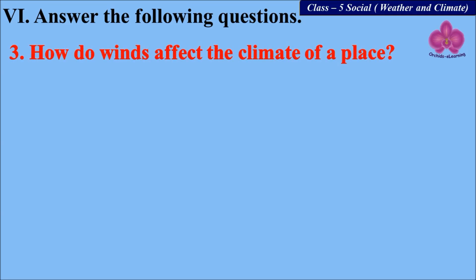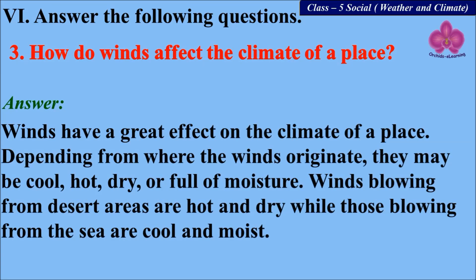How do winds affect the climate of a place? Winds have a great effect on the climate of a place. Depending on where the winds originate, they may be cool, hot, dry, or full of moisture. Winds blowing from desert areas are hot and dry, while those blowing from the sea are cool and moist.